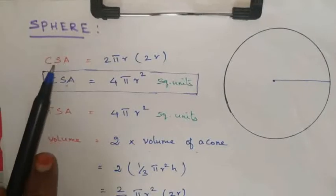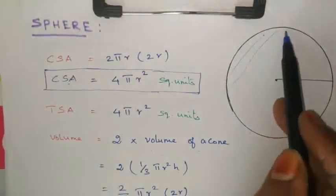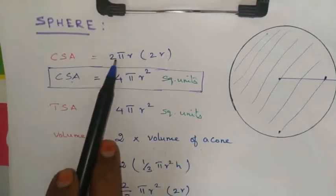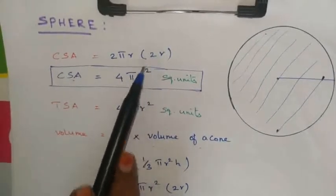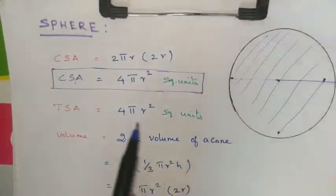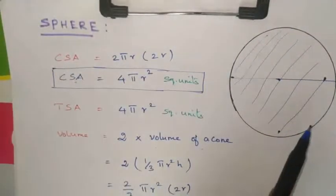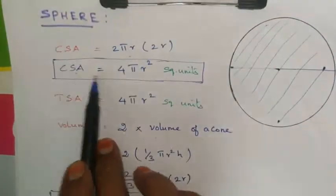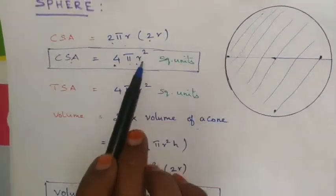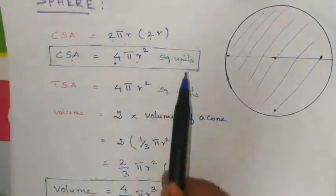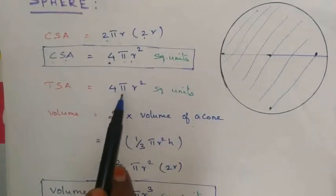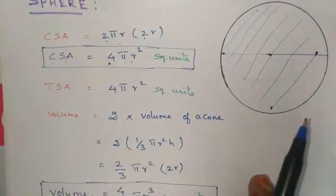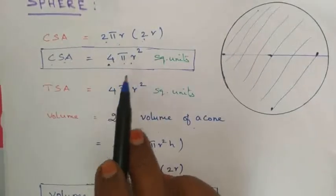Now let's look at the sphere. The CSA of a sphere is derived as 2πr × 2r = 4πr². The TSA of a sphere is also 4πr². For a sphere, CSA and TSA are the same formula.